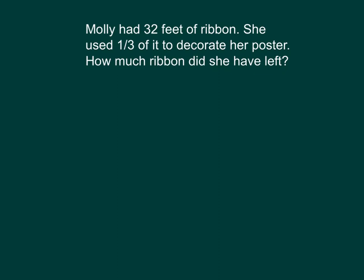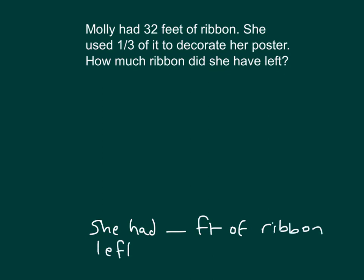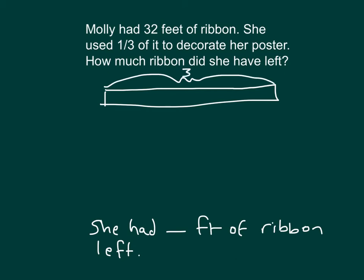Here we have another problem. Molly had 32 feet of ribbon. She used one third of it to decorate her poster. How much ribbon did she have left? Using a tape diagram: she had 32 feet of ribbon, used a third of it — so we know the whole. Our whole amount is 32 feet, and we have a fractional part of one third.